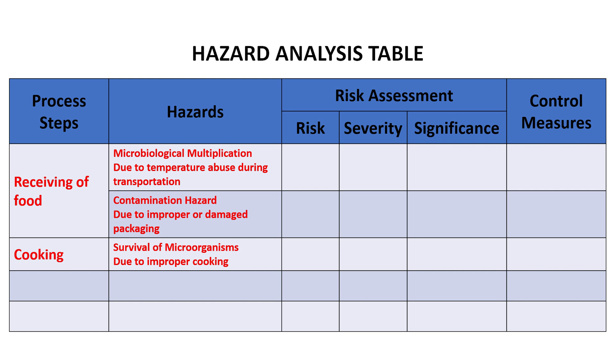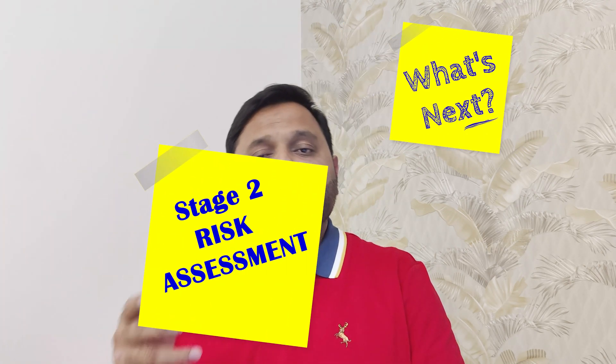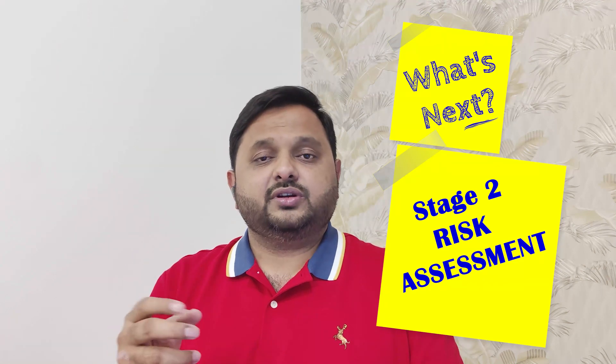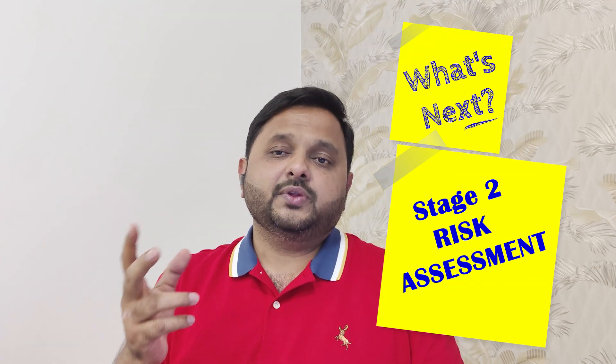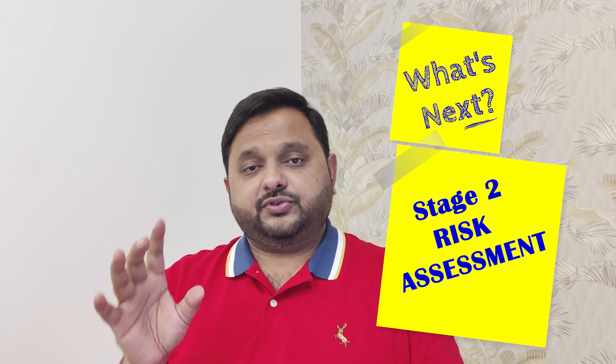So this is stage number one explained: first you list down the processes and in front of each process you list down the potential hazards. This is the end of the first stage of HACCP. In the second stage we will discuss the risk assessment or risk analysis of each hazard, which will be coming up in the next video.